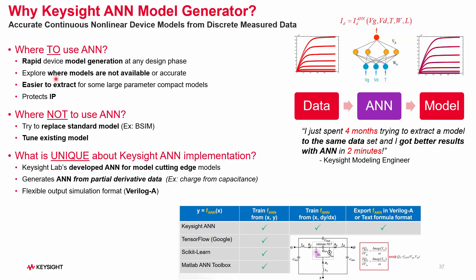Say you have a situation where the model just isn't available — it's cutting-edge technology — or the standard compact model you have is not accurate enough. In some cases, it's just faster. Like the quote on the right from one of the Keysight Labs modeling engineers: they went from four months literally to two minutes with an ANN on a GaAs device. It can be easier to extract, but not always. And lastly, we recommend using it to protect your IP.